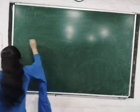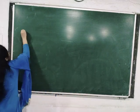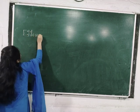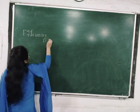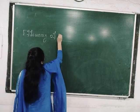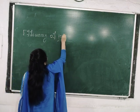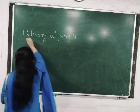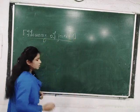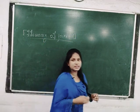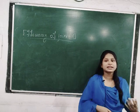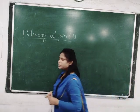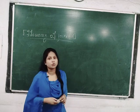Efficiency of joint. Efficiency of joint is the ratio of the strength of the joint and the strength of the solid plate. Solid plate means the plate without bolt hole.